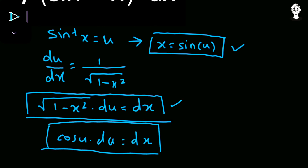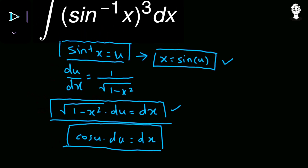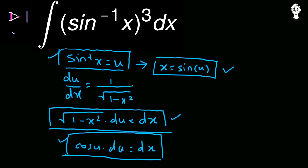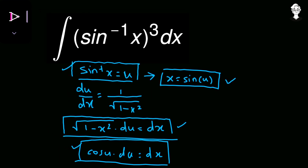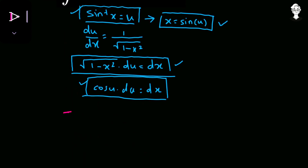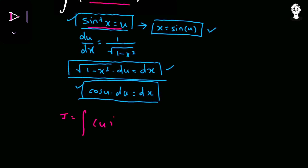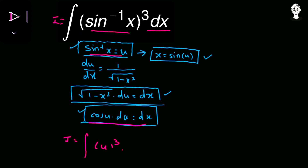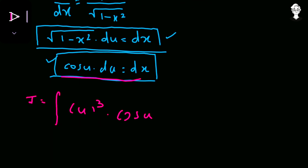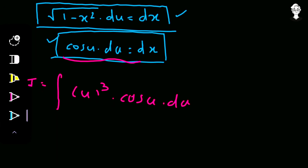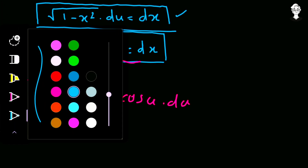We have derived that dx equals cos u du and sin inverse x equals u. Letting the integral be I, substituting into the original question gives us: I equals the integral of u cubed times cos u with respect to u.